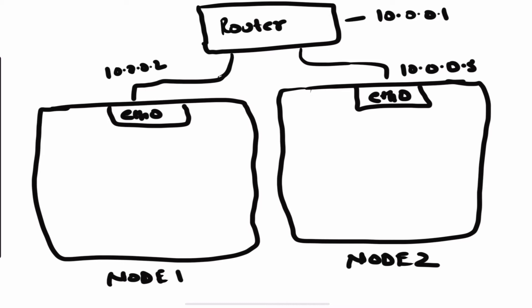In this picture I've taken a Kubernetes cluster of two nodes on some network that can talk to each other via a router or gateway. This node has an IP of 10.0.0.2, this one has 10.0.0.3, and the router has an IP of 10.0.0.1.